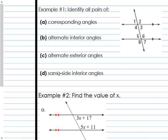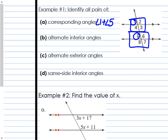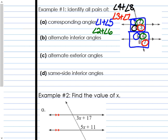So let's do some practice. Identify all pairs of these angles — all pairs of corresponding angles. Think about it as this is a set of four angles and this is a set of four angles. Angle one is corresponding to angle five. Angle two is corresponding to angle six. Look at angle four — angle four is corresponding with angle eight. And then you have angle three and angle seven. So those are your four pairs of corresponding angles.